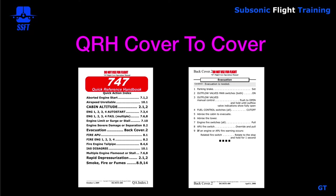QRH cover to cover would look like this: the front cover would be the quick action index and the back cover would be the passenger evacuation. The evacuation is always on the back cover so that it can be easily found by just picking up the book, turning it over, and you'd be right at the evacuation checklist.